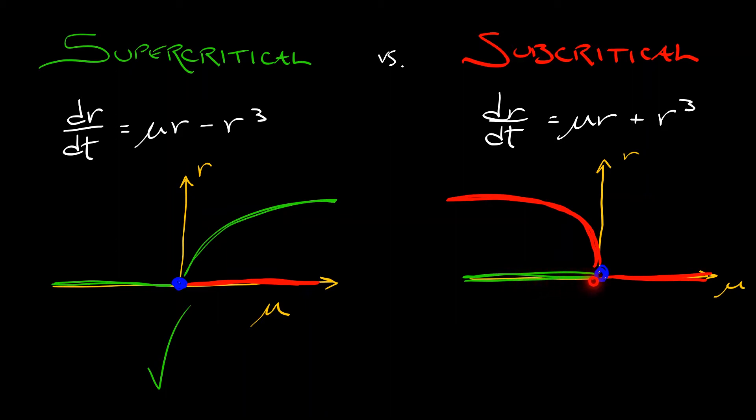just as in a supercritical case, your oscillations are growing over time. But instead of converging to a stable limit cycle, your oscillations just keep growing and growing, so you panic. You turn the dial back down.